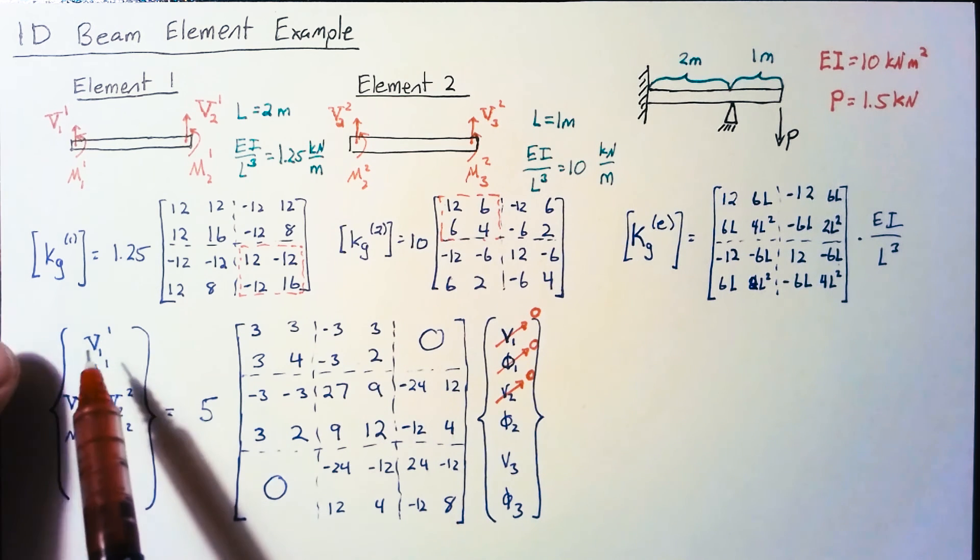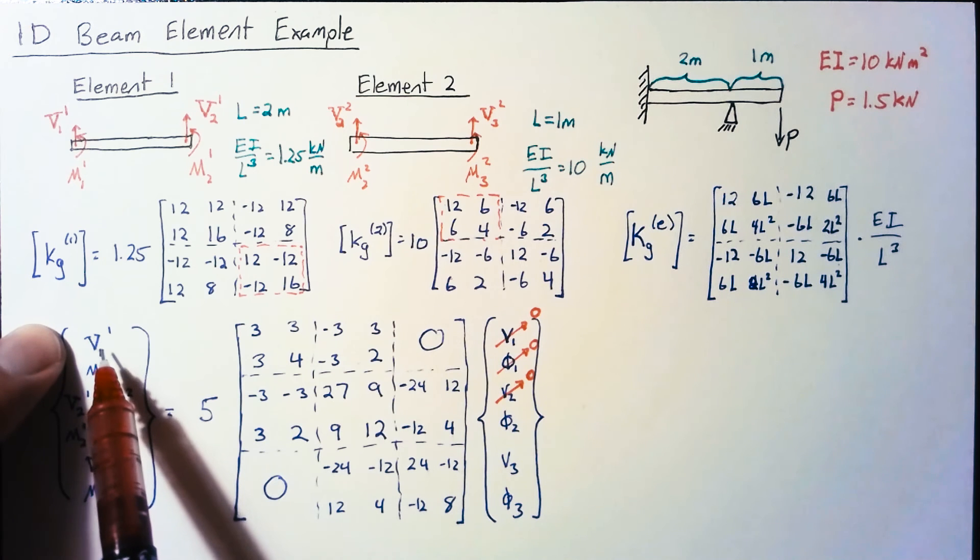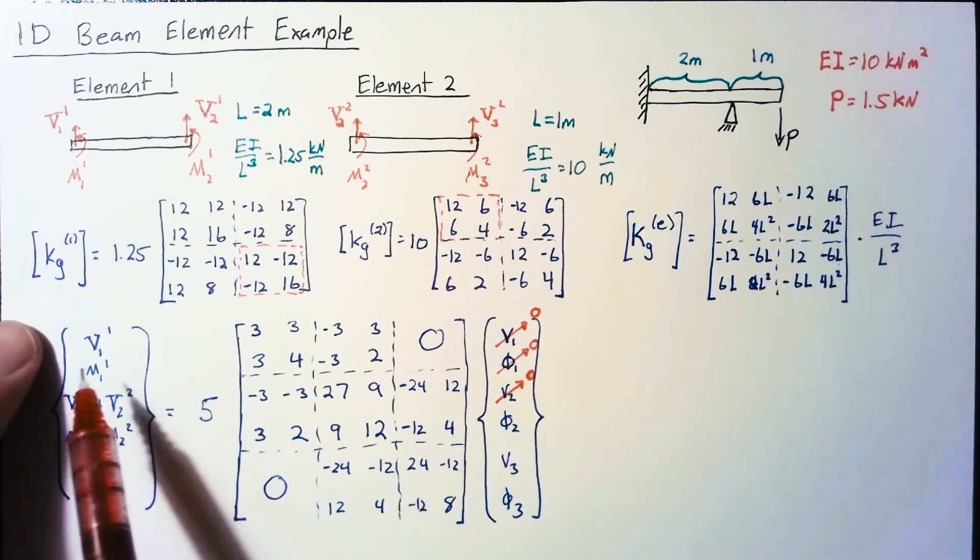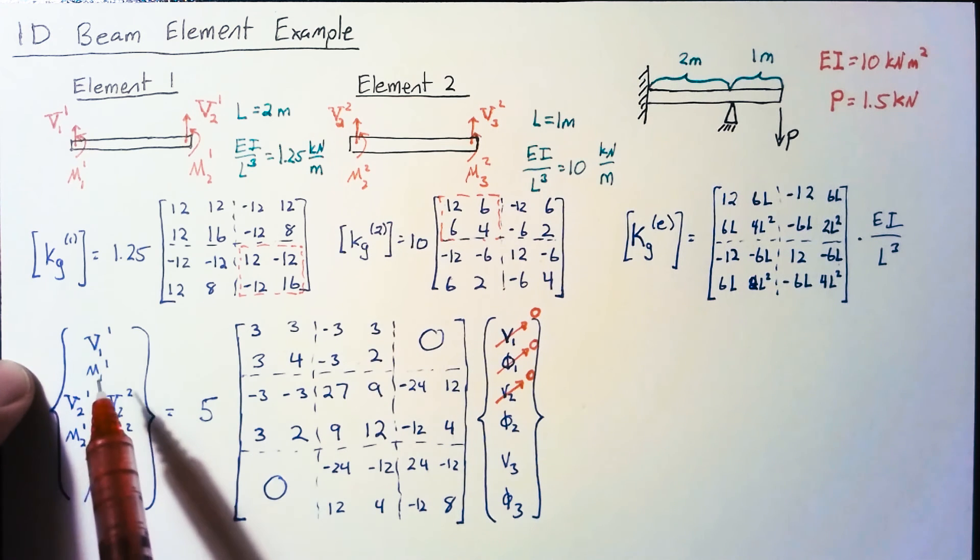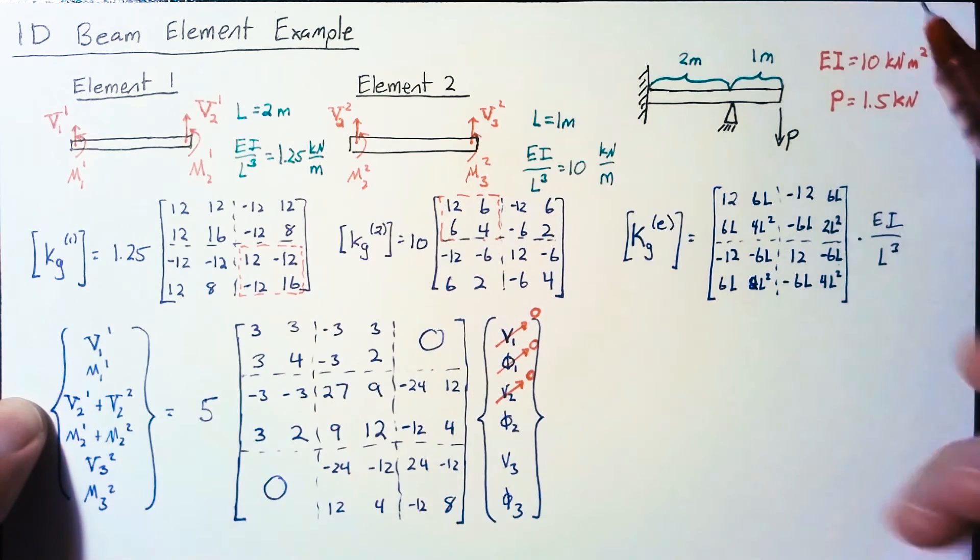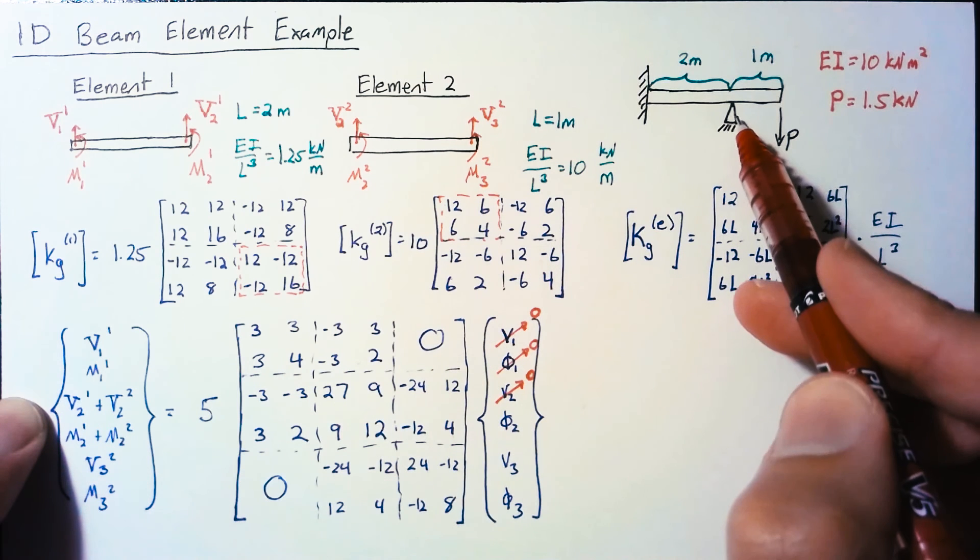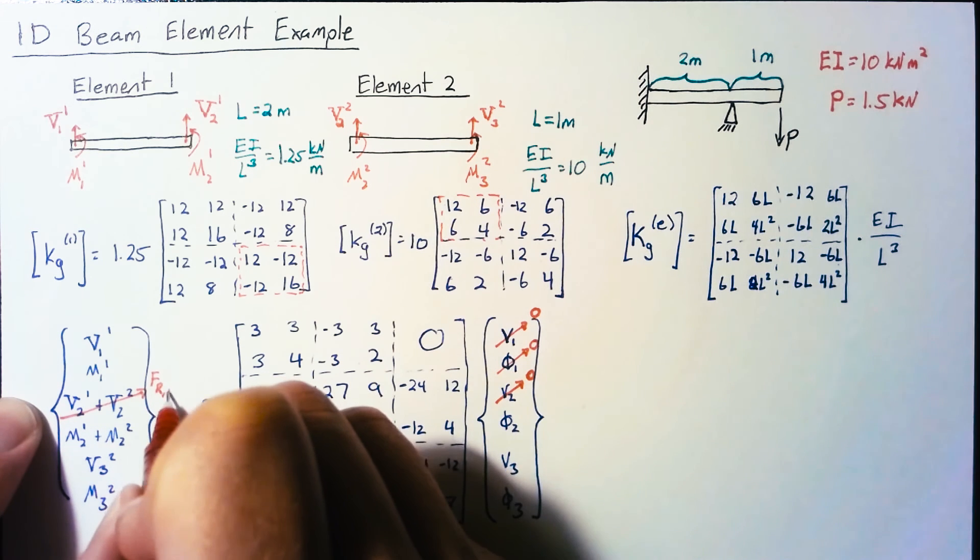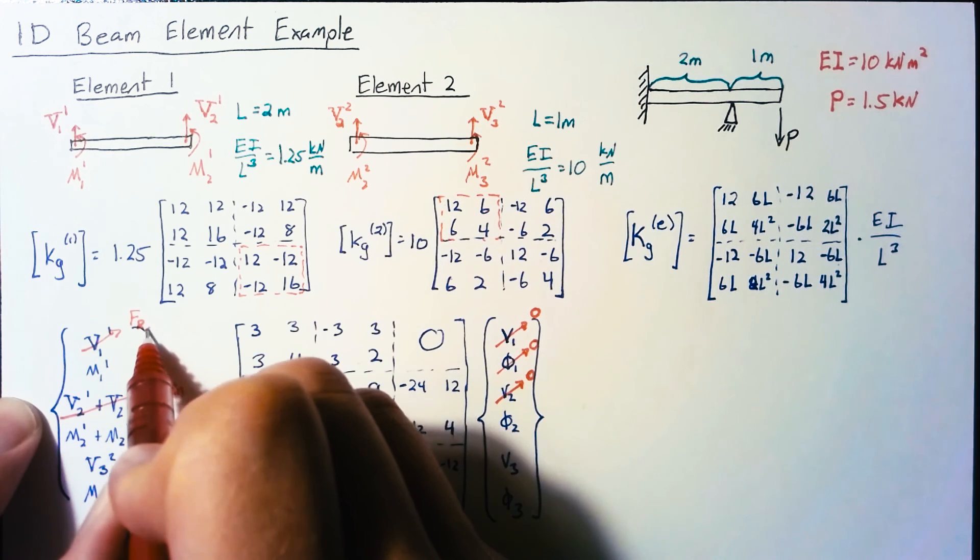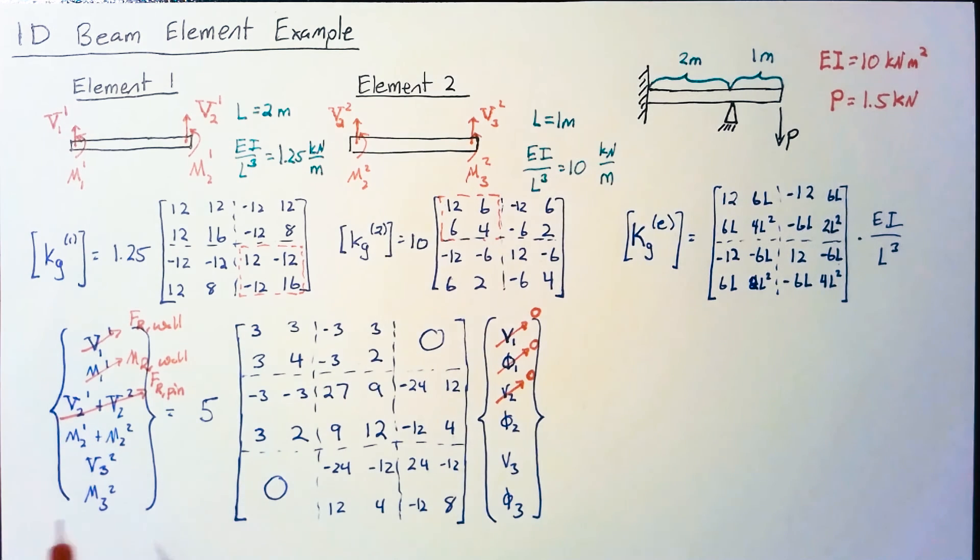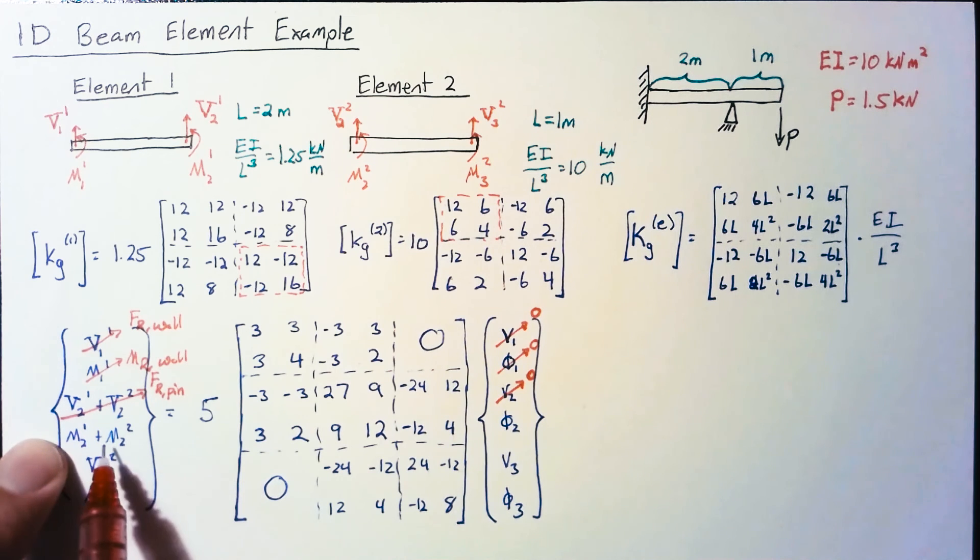Looking at our force vector, we can't touch the shear force or moment at the wall since these are reaction forces. Same with V21 plus V22 - if you sum these, this is the reaction force from the pin joint. These are our reaction force and moment from the wall.